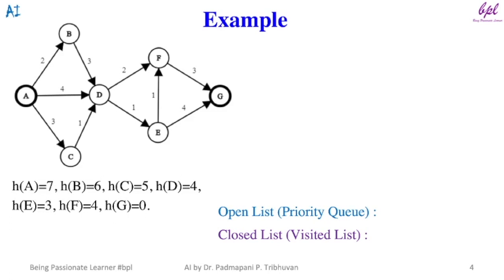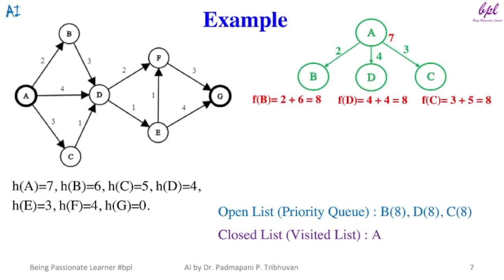Here we will have an open list and a closed list. The algorithm will start with initial node A. A will be added to the open list along with its evaluated value, calculated using f(n) = g(n) + h(n). f(A) = 0 + 7 = 7. Node A is the only node in the open list, so it will be explored and then added to the closed list.